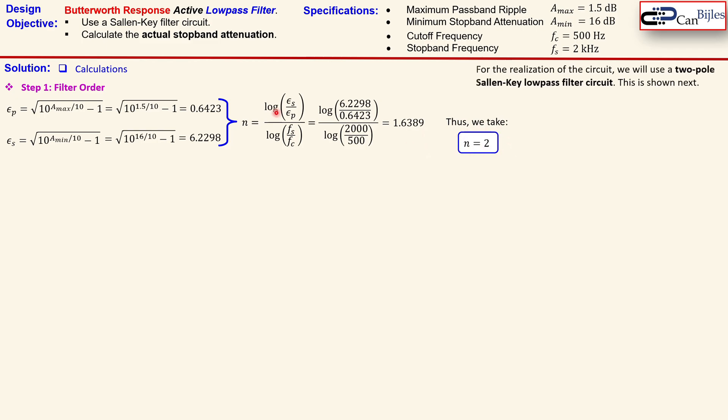So for this design we need to use the Sallen-Key filter configuration. That means for the realization we need to use a 2-pole, a second order Sallen-Key low-pass filter circuit and that is now given by this circuit.